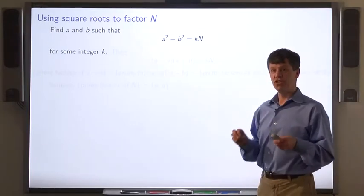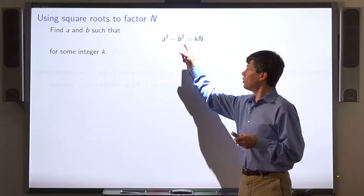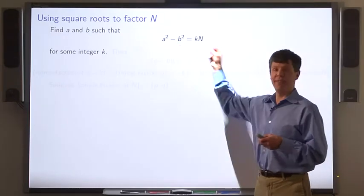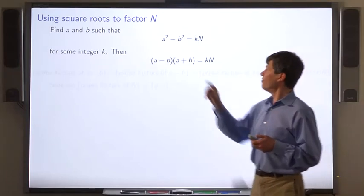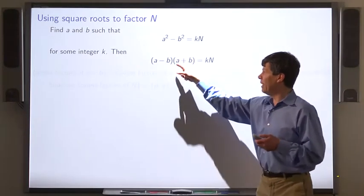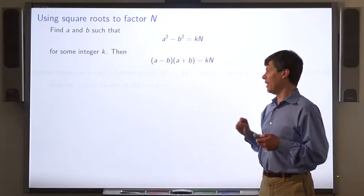We're going to try to find integers a and b such that a squared minus b squared is k times n for some integer k. In that case, we factor the left-hand side: a minus b times a plus b is k times n.